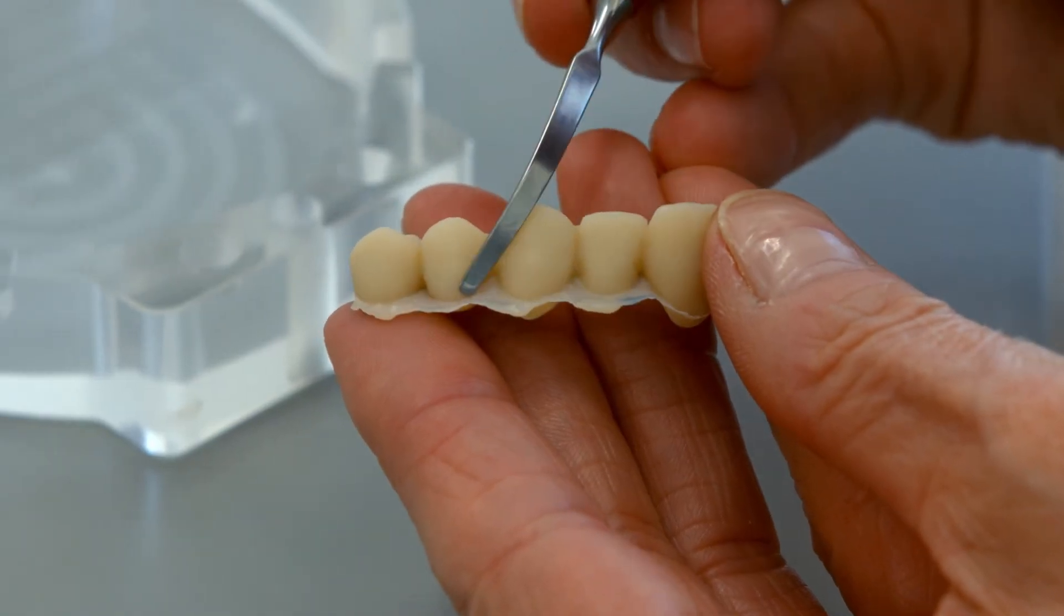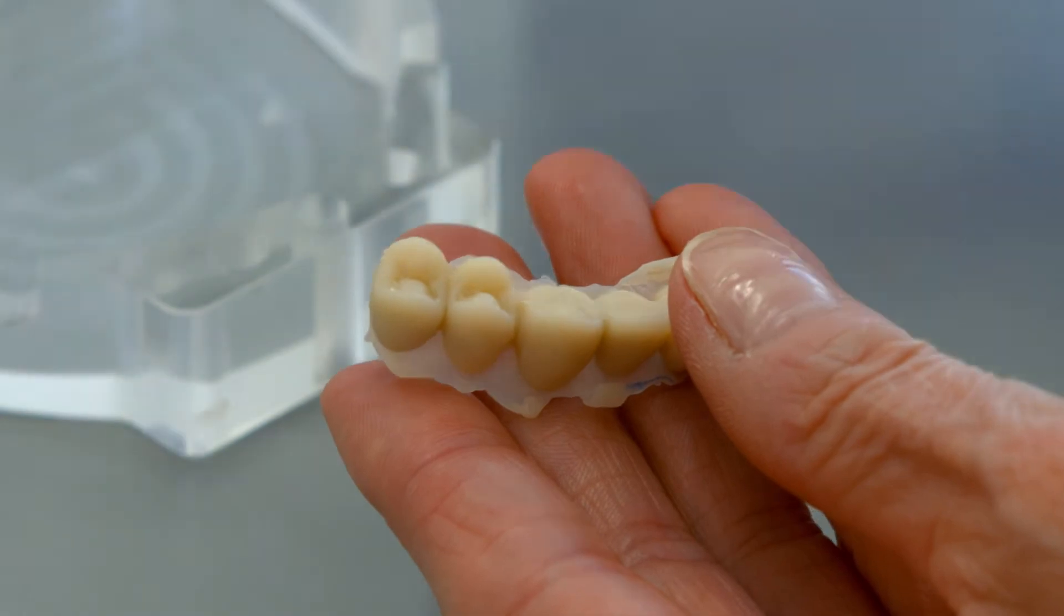Light cure the bridge again after you have removed it from the flask. This is essential to ensuring complete polymerization.